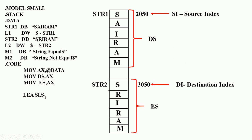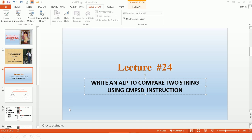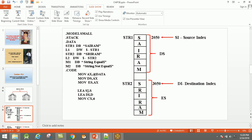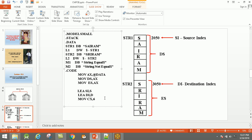str1. Then load effective address DI, str2. So the starting address of string 1 goes into SI and the starting address of string 2 goes into DI.